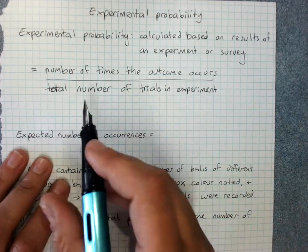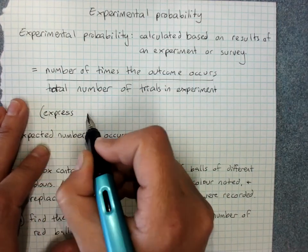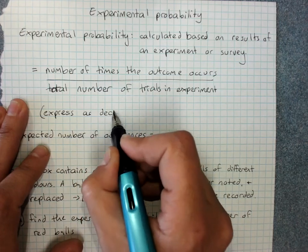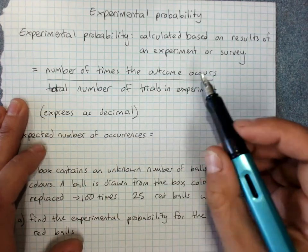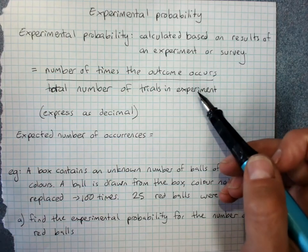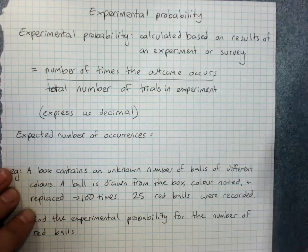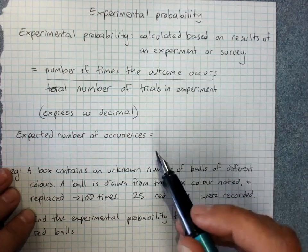And it is generally expressed as a decimal rather than leaving it as a fraction. It's more useful as a decimal, similarly to relative probability or percentage probability.